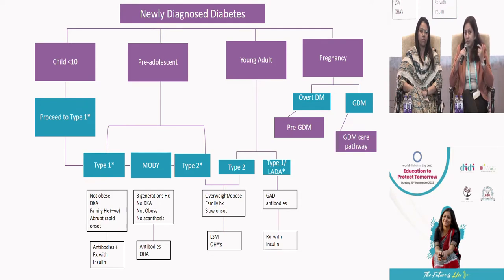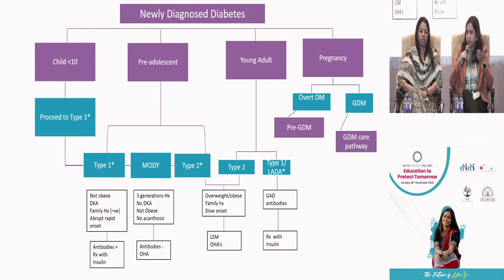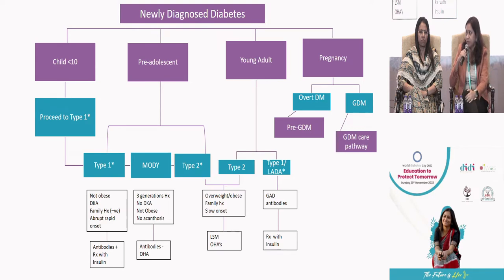For GDM diagnosis: if the first trimester test is completely normal, we go ahead with testing at 24 to 28 weeks. There we use a one-step approach with 75 grams glucose, testing blood glucose at 0, 1, and 2 hours with established cut-offs, as recommended by ADA. Even if the lady has borderline blood glucose levels in the first trimester, she may be at risk of developing GDM later and must be tested at 24 to 28 weeks.